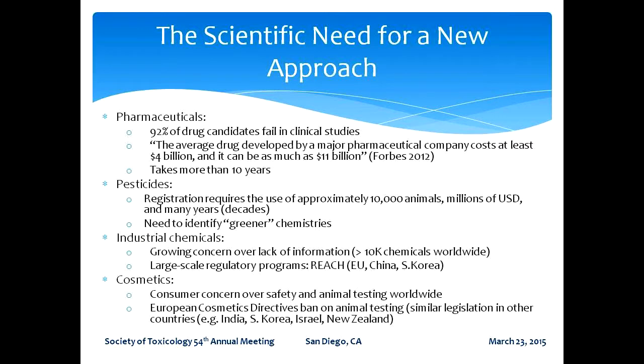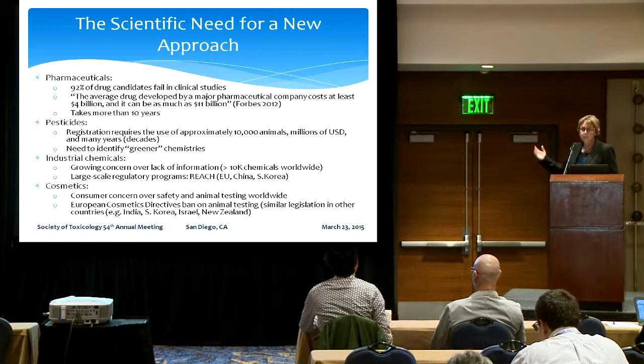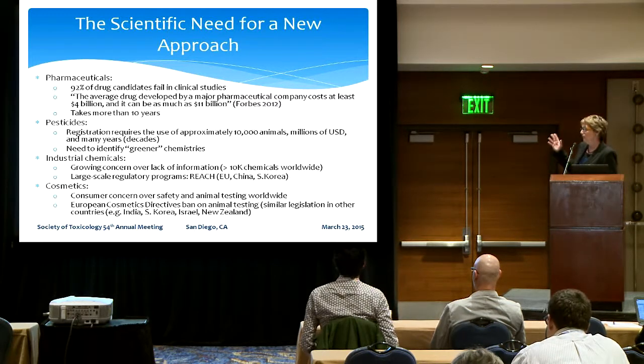It's been considered for a long time that improvements are needed in the way we do risk determinations, and this really spans the spectrum of chemical sectors. From the pharmaceuticals area, there's still a high failure rate of pharmaceuticals even after a lot of investment and assessments. This is largely due to a failure of translation from the preclinical to the clinical assessment stages — in large part due to a lack of efficacy or unforeseen toxicity in clinical trials, after spending several billion dollars and more than a decade on a particular chemical. So clearly there's room for improvement there.